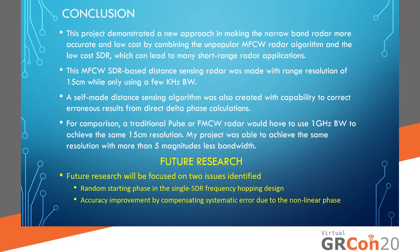In conclusion, my project demonstrated a new approach in making narrowband radar more accurate and low-cost by combining the MFCW radar algorithm with the low-cost SDR, which can lead to many short-range radar applications. This MFCW SDR-based distance sensing radar achieved a range resolution of 15 centimeters while using only a few kilohertz of bandwidth. A self-made distance sensing algorithm was also created with the capability to correct erroneous results from direct delta phase calculations. For comparison, a traditional radar would require 1 gigahertz of bandwidth for the same 15 cm resolution — more than five orders of magnitude more bandwidth.